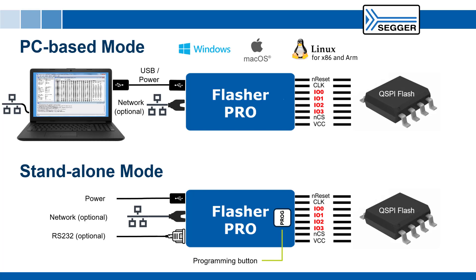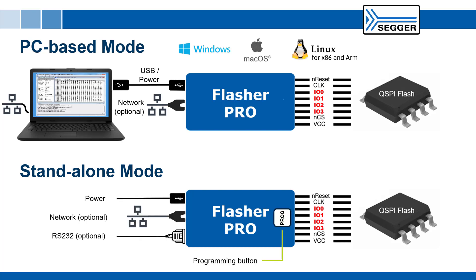Flasher Pro can be operated standalone with the push of a button, controlled remotely — for example by mass production environments or automated test equipment — or controlled by a PC. This may include unique serial numbers and patch data.